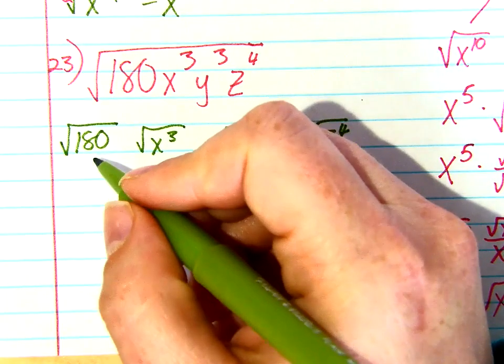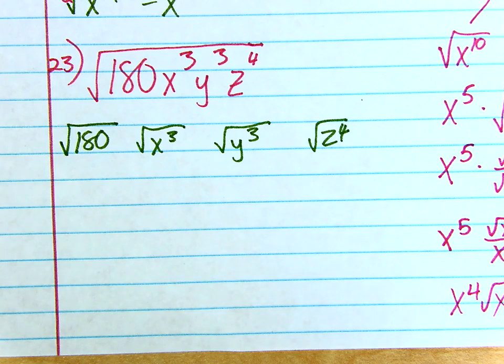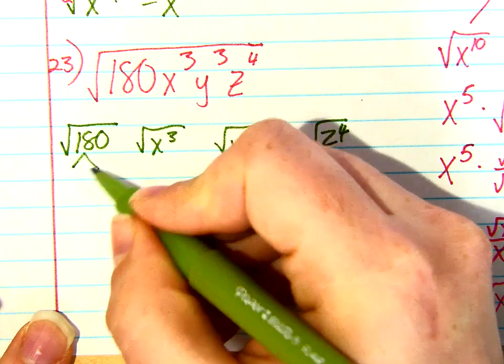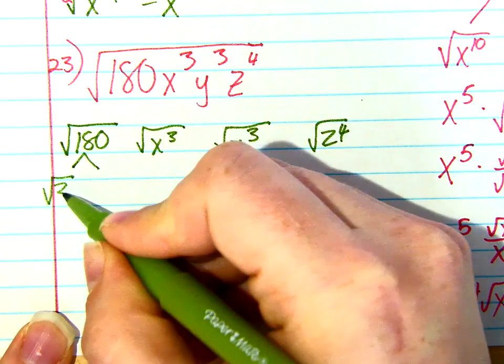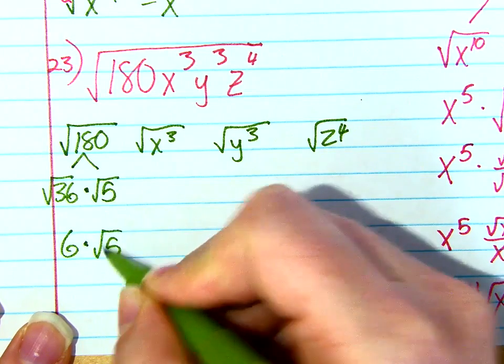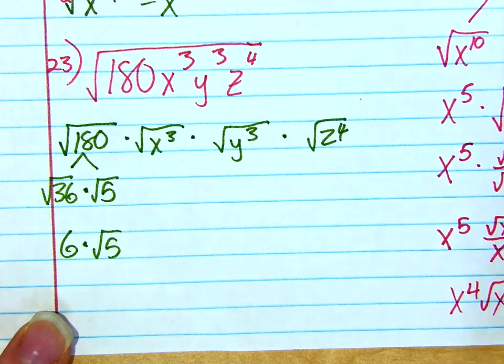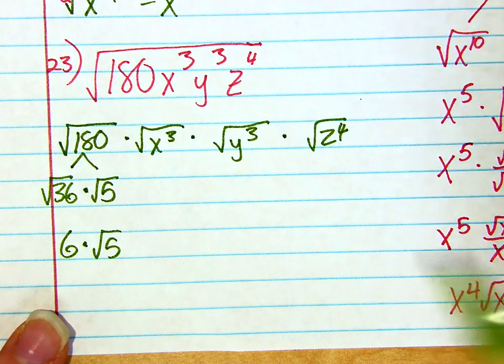So square root of 180. Start off, you've got to think of what is the largest perfect square that goes into 180. 36 goes in five times. Yeah, so this is going to split up into the square root of 36 times the square root of five. Okay, so that just gets me six times the square root of five. Remember that this is all multiplication. It's all multiplication in between these. So I'm just going to multiply all my answers together at the end.